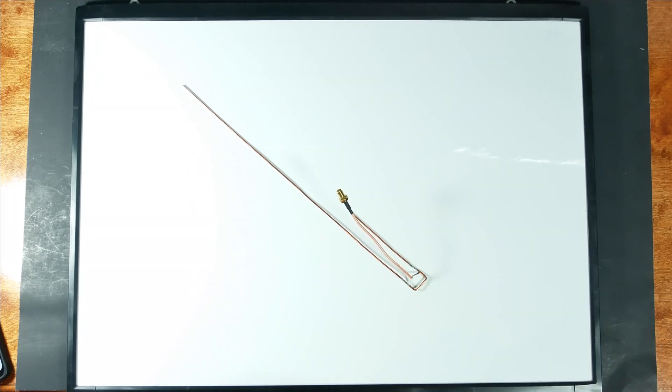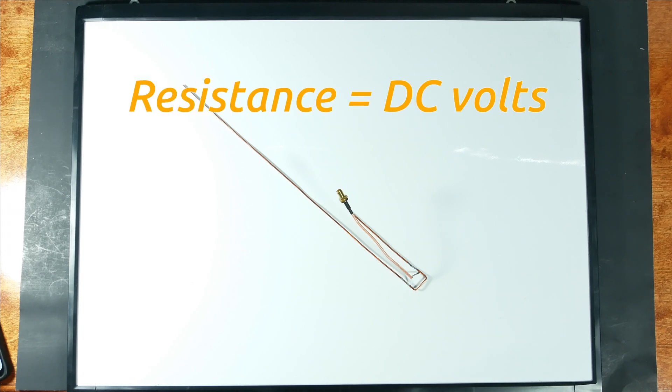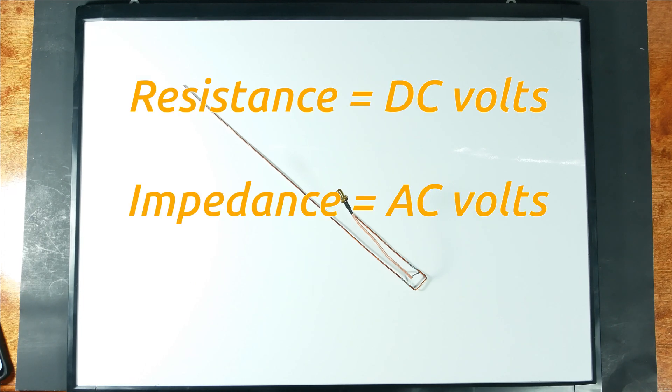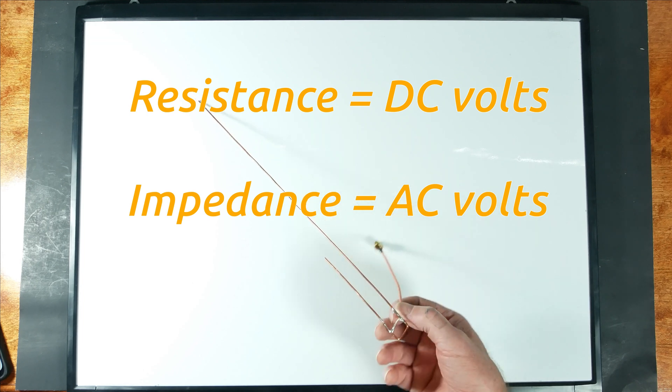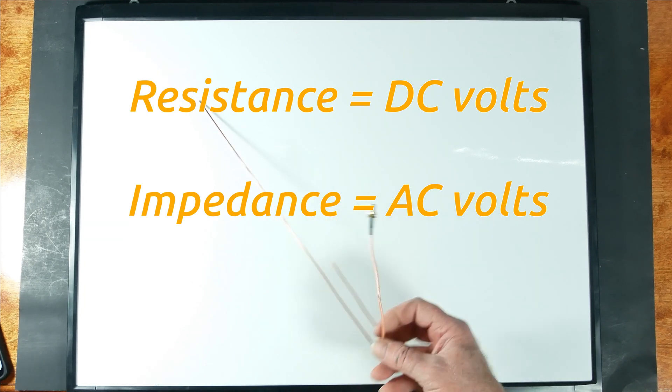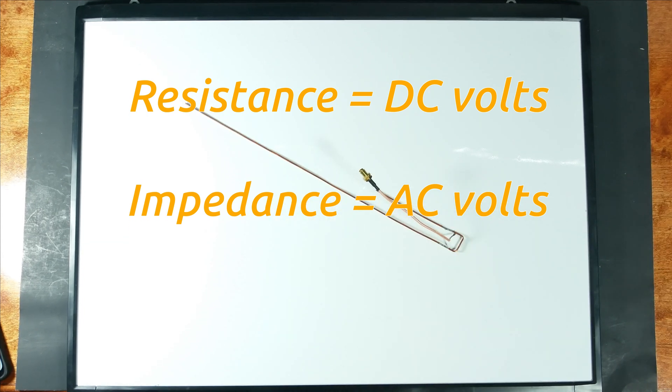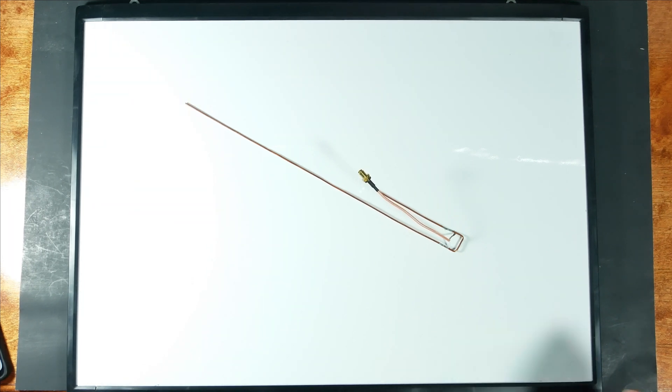So I'll cut right to the chase. The reason this is happening is because there is a big difference between resistance and impedance. Resistance is an aspect of DC voltage, but impedance is an aspect of AC voltage. And when we're dealing with RF, RF is truly an AC voltage.